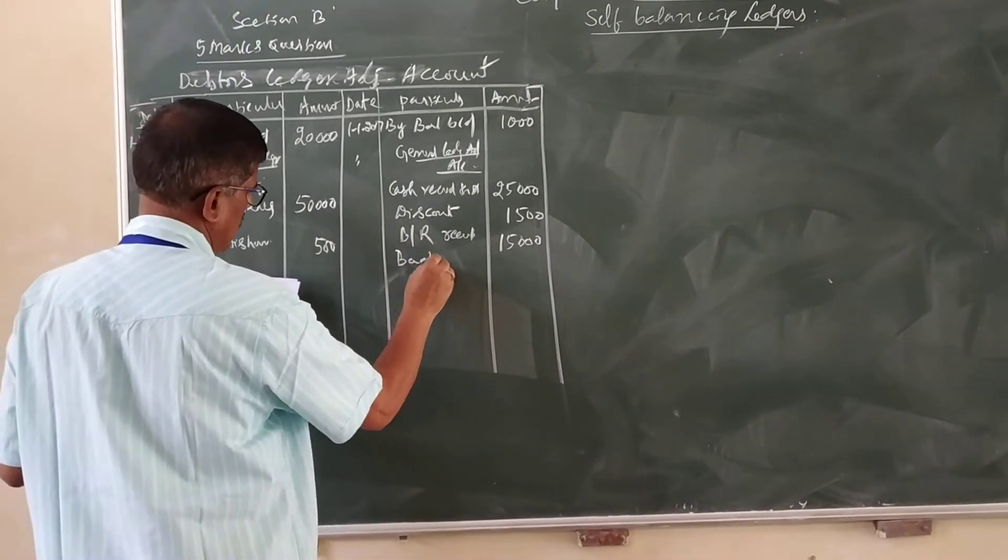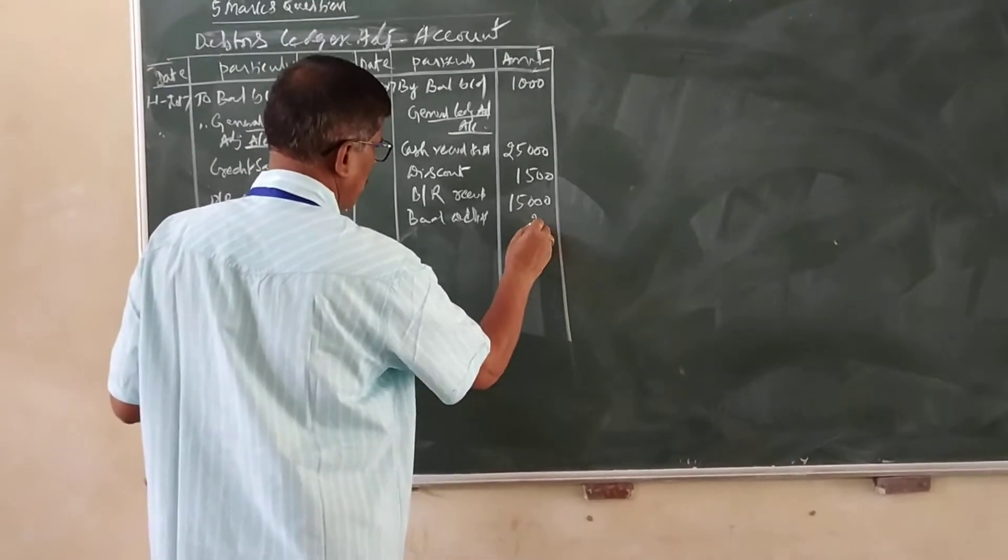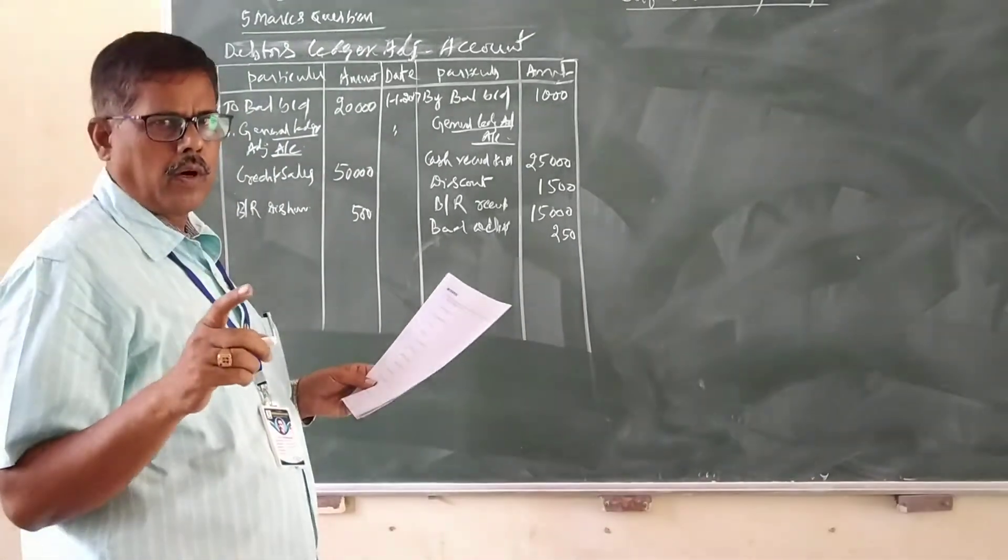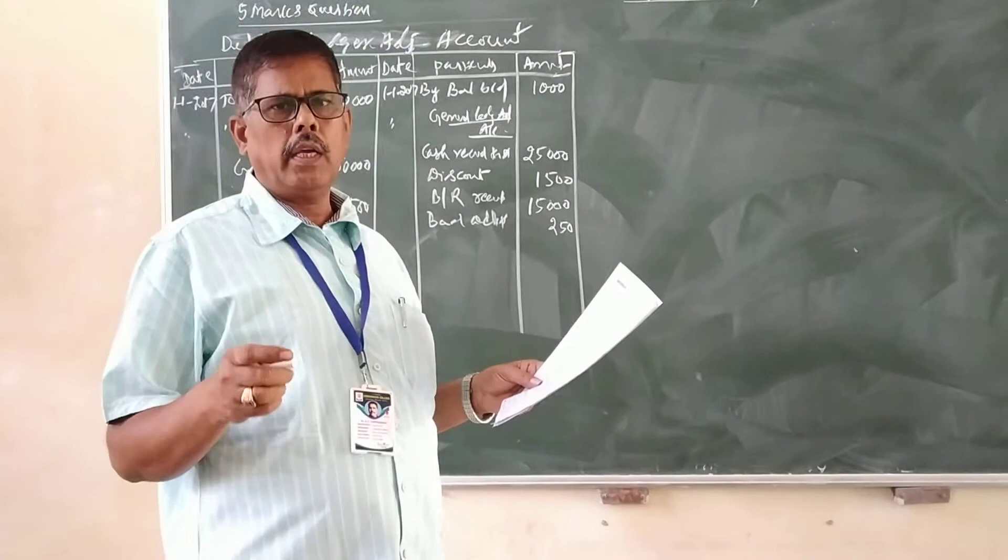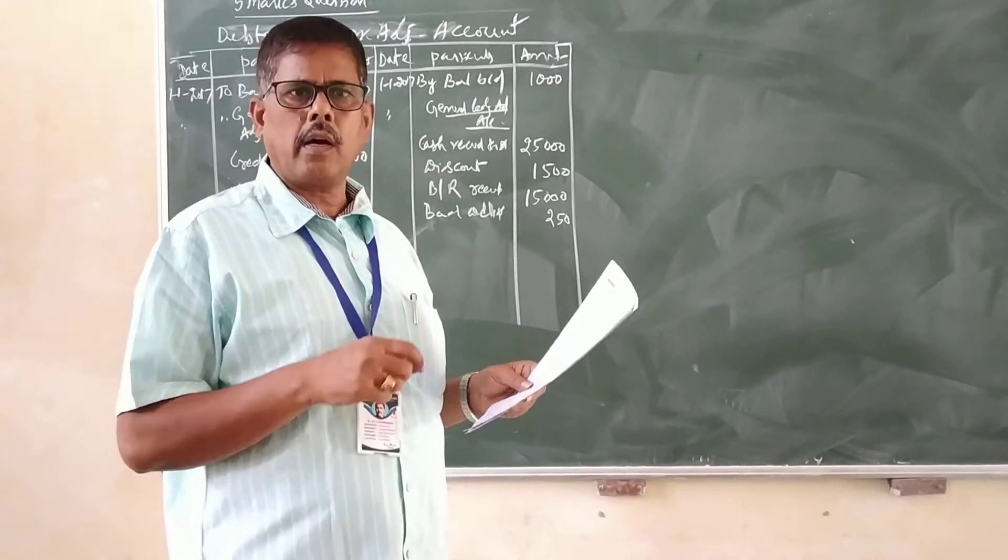Bad debts written off 250 rupees. Then provisions, remember, for any provision, they are not taken into consideration, they are simply ignored.